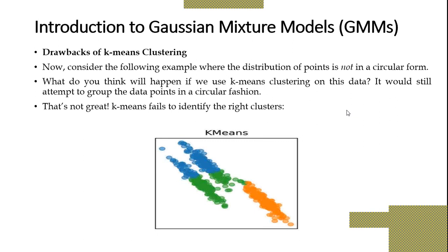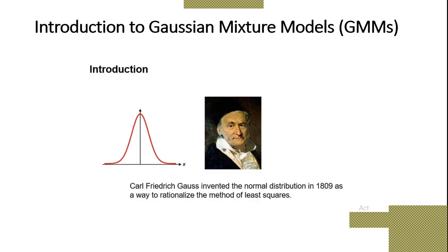At this condition, our data cells are not in a circular format. So how can we find out the centroid? It is very difficult to handle this condition, and this is one of the drawbacks of K-means clustering. To overcome this problem, there is a method called the Gaussian Mixture Model, also called GMM.